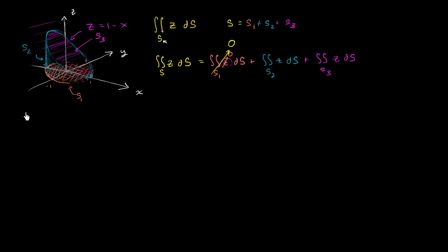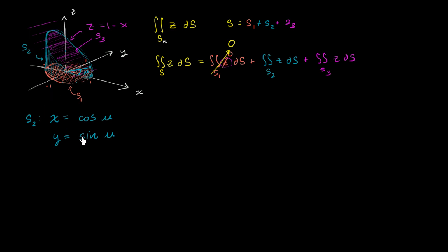Now let's tackle surface S2. The valid x and y values are those along the unit circle, so we parametrize it as a traditional unit circle: x equals cosine of u, y equals sine of u, where u is the angle between the positive x-axis and our position on the unit circle. As long as u is between 0 and 2π, we go around the unit circle covering all valid x and y values.